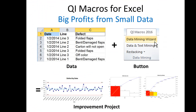Another thing that is very powerful in the QI Macros — we just added this in January of 2016 — is the Data Mining Wizard. People have a lot of data that looks like the data on the left, where it's by line, by date, by location, by whatever, the type of defect they have, but they don't really know how to analyze all of that. I realized I can take that data and turn it into a whole improvement project with a control chart, Pareto charts, and everything.